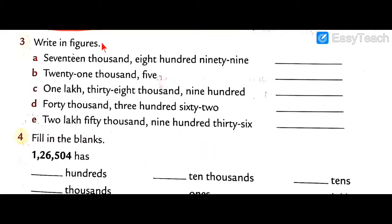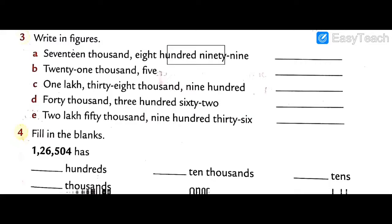Now Question Number 3: write in figures. Figures means digit. They give numbers in words and we convert to figures — figure and digit are similar words. Question Number 3, first: seventeen thousand, eight hundred, ninety-nine. So we write: one, seven, eight, nine, nine — 17,899.